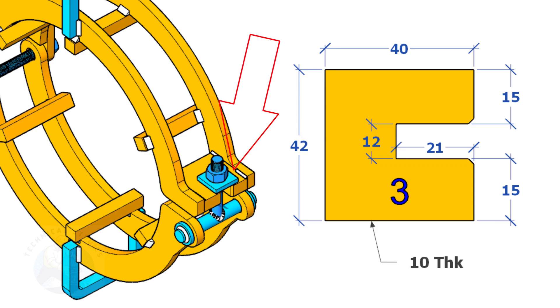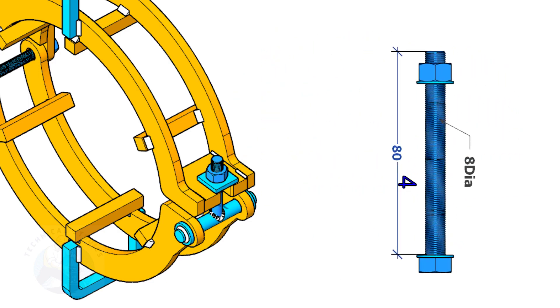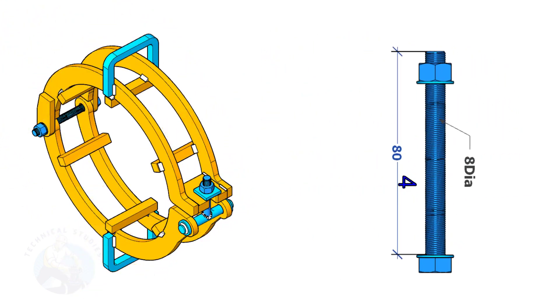Item number three sits here. Item number four is a bolt. You can use a stud bolt or a round bar of the same size with stoppers tack welded on both ends of the rod after full assembly.